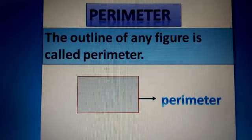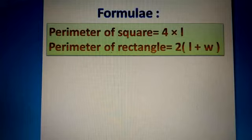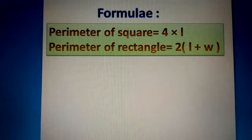So what is the formula for the perimeter of a square and rectangle? The perimeter of a square is equal to 4 × l, because a square has four equal sides. The perimeter of a rectangle is equal to 2 × (l + w).